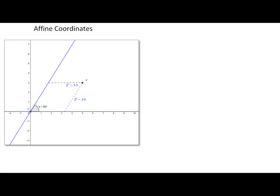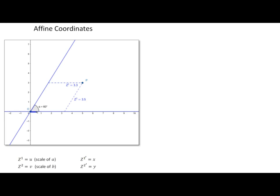One final example: a transformation between affine coordinates (also called skewed coordinates) and the standard Cartesian system. The z-prime coordinates are Cartesian, and we define variables u and v for the skewed coordinate system, with scaling factors a and b associated with u and v respectively. In the diagram, the u-axis and v-axis are skewed relative to the Cartesian x-axis and y-axis.